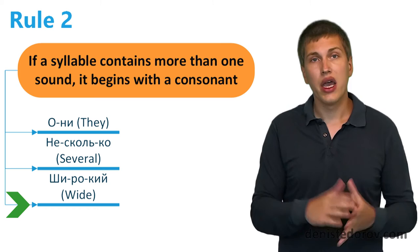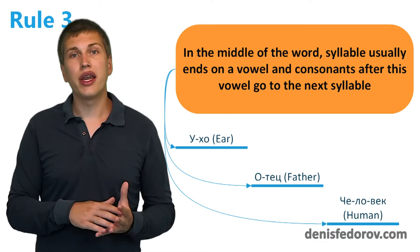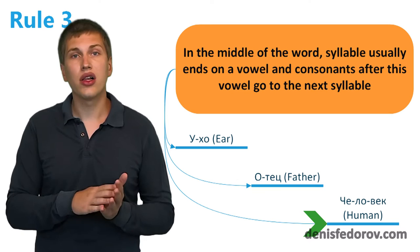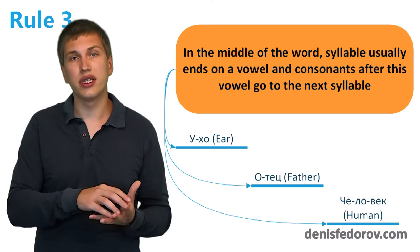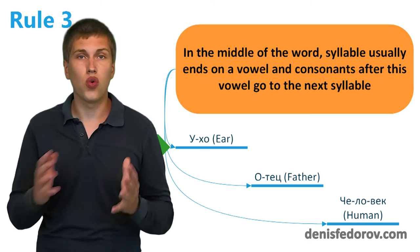In simple words, syllables that are longer than one sound always starts with a consonant. The third rule says that in the middle of the word, syllable usually ends on a vowel and consonants after these vowels go to the next syllable. The examples for these rules are УХО, ОТЕЦ, ЧЕЛОВЕК. In summary, this rule says that all syllables except the last one usually end on a vowel. And all syllables except the first one usually begin with a consonant.